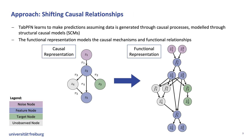So, how does our approach integrate into Tab PFN? Tab PFN learns to make predictions assuming data is generated through causal processes. For this, tabular datasets are sampled from a prior that is modeled through structural causal models, whereby the generated SCMs serve as causal skeletons describing the causal relationships of the sampled data.